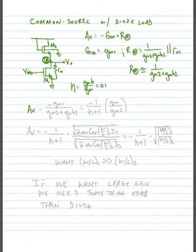After making that substitution, we can say that our voltage gain is equal to minus GM1 divided by GM2 plus GMB2. Or, plugging eta in, we can say it's equal to minus 1 divided by eta plus 1 times GM1 over GM2.